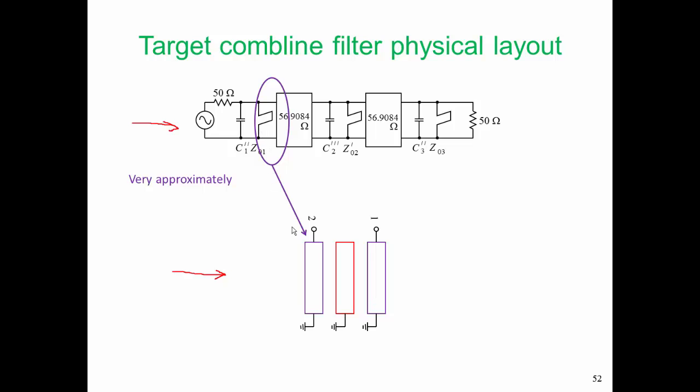And that stub is realized essentially by a single microstrip line. We can ignore the coupling for the moment, and that first effective stub, which combines Z01 with the value coming from the inverter, is going to be realized by that first line. Z03 will be realized by the final line.